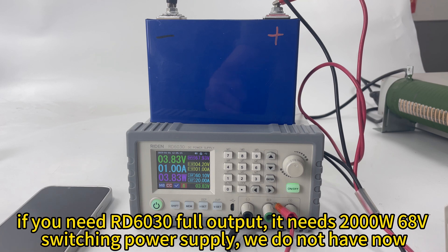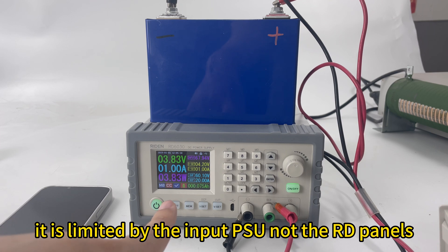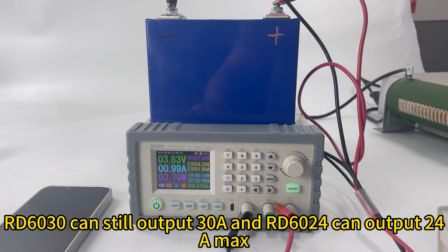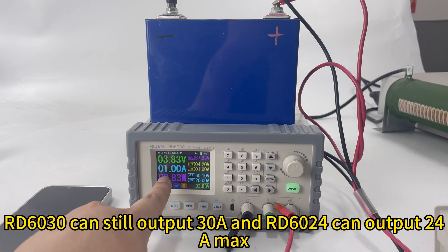If you want RD6030 for output, you need to use 2000 Watt 68 Volt switching power supply. We do not have none. Now, it is limited by the input PSU, not the front panel limit. So RD6030 still can output 30 Amp and RD6024 still output 24 Amp max.